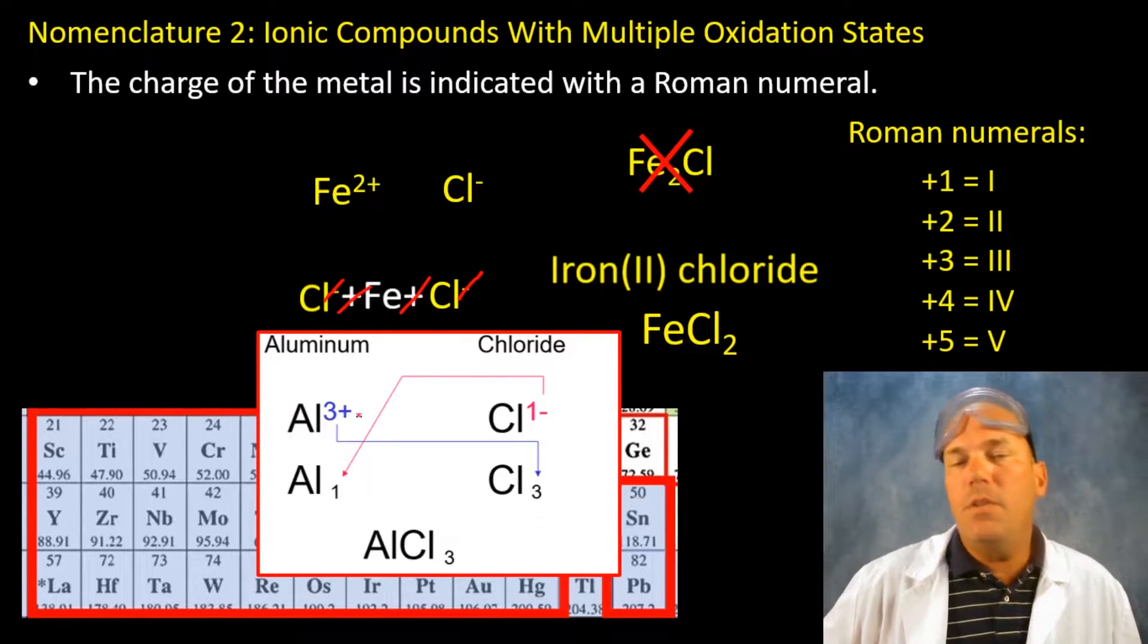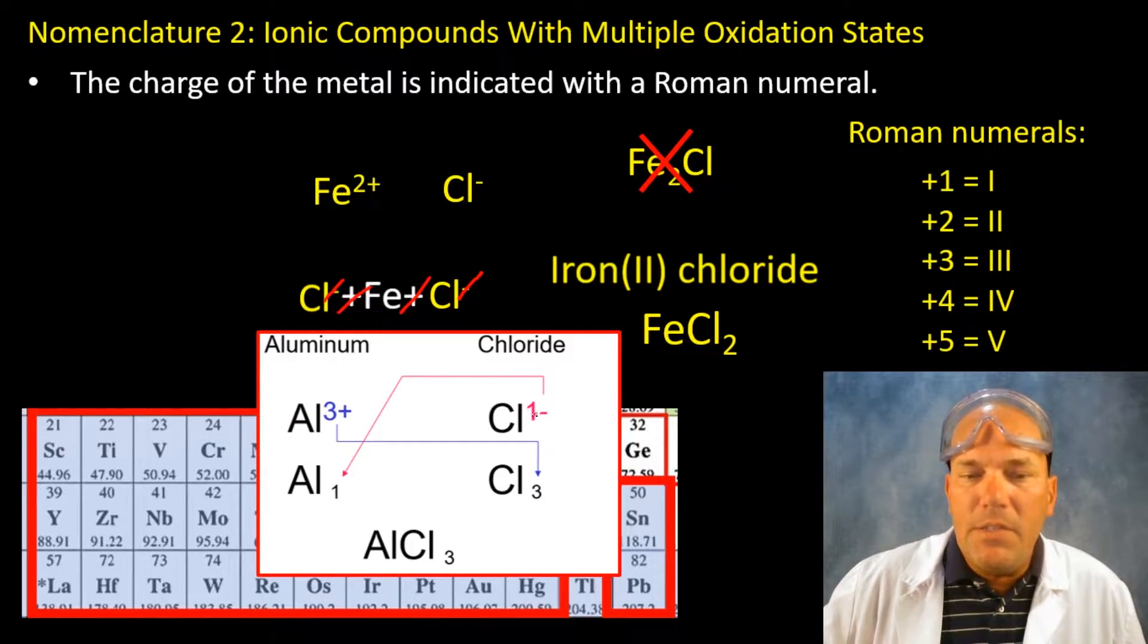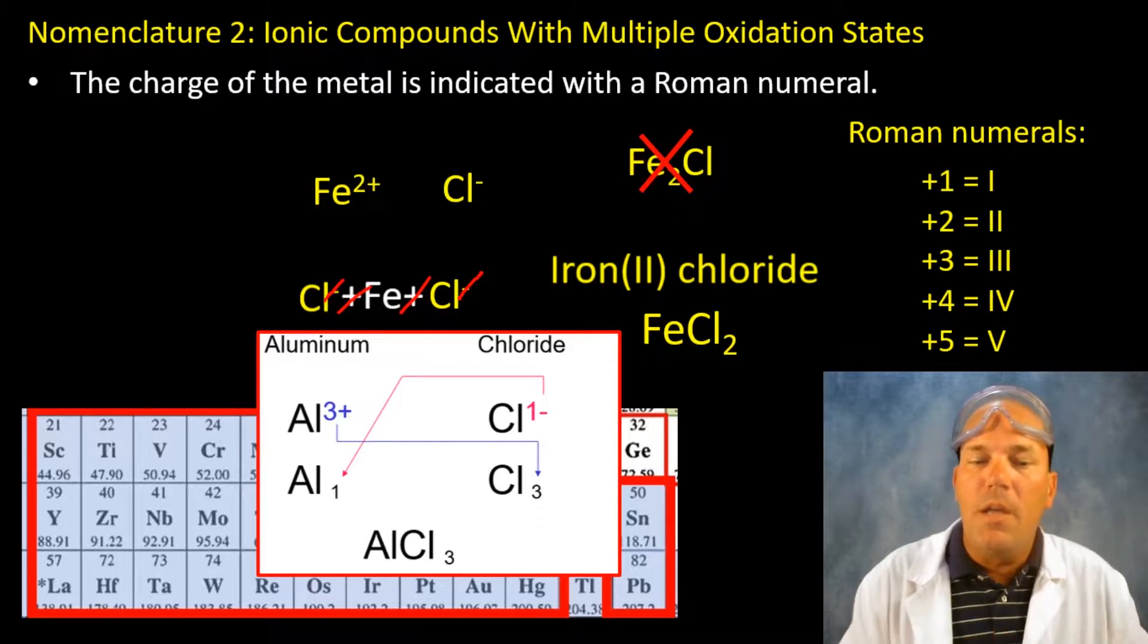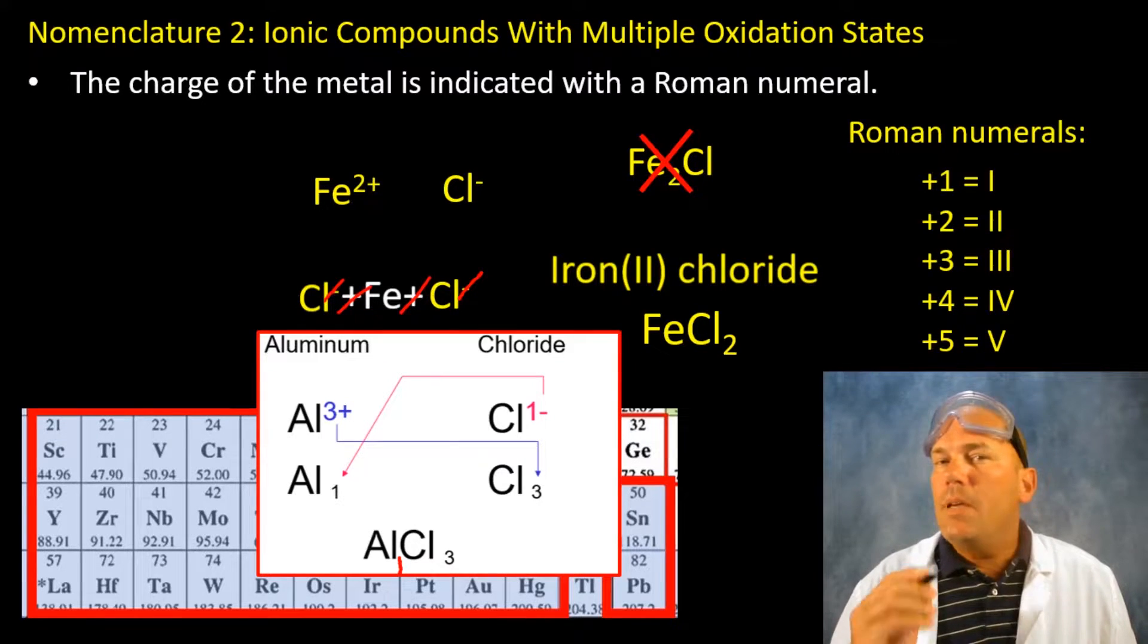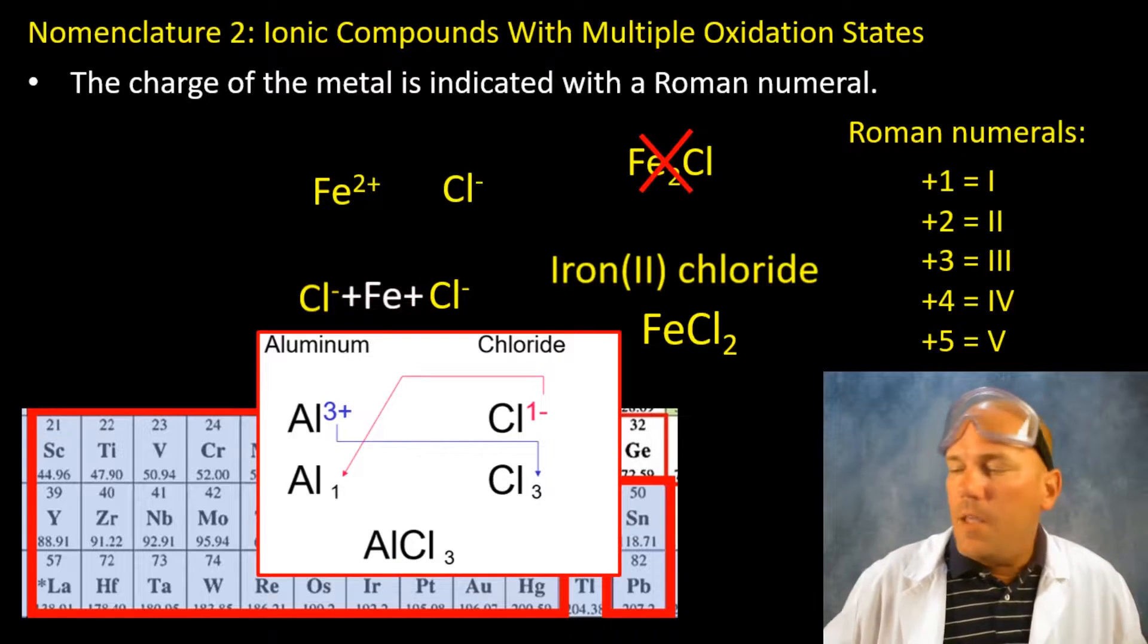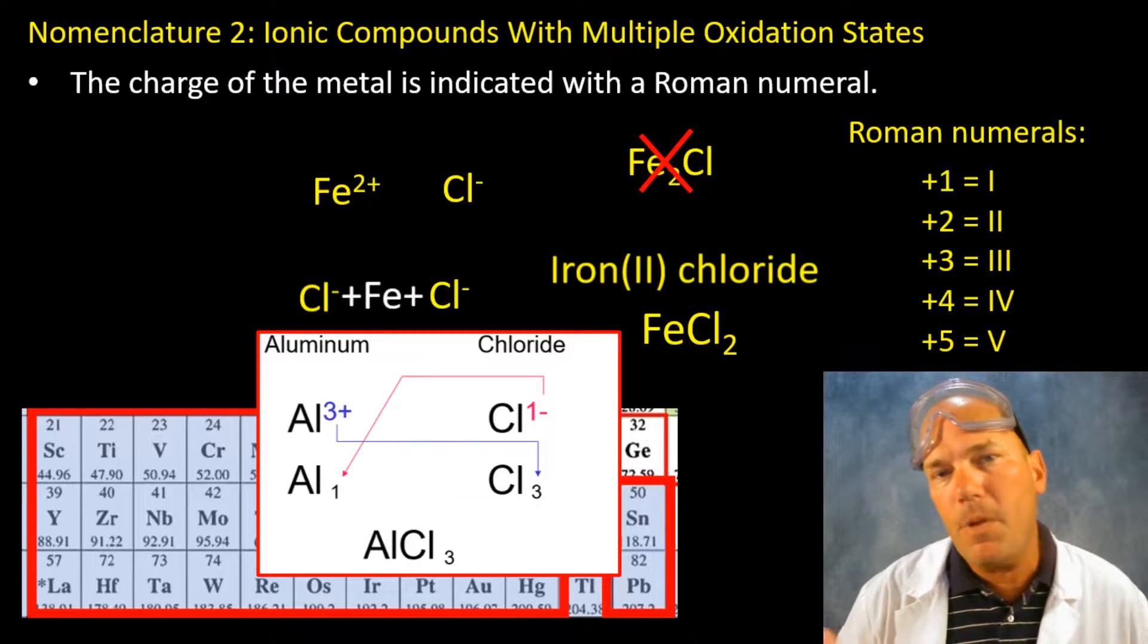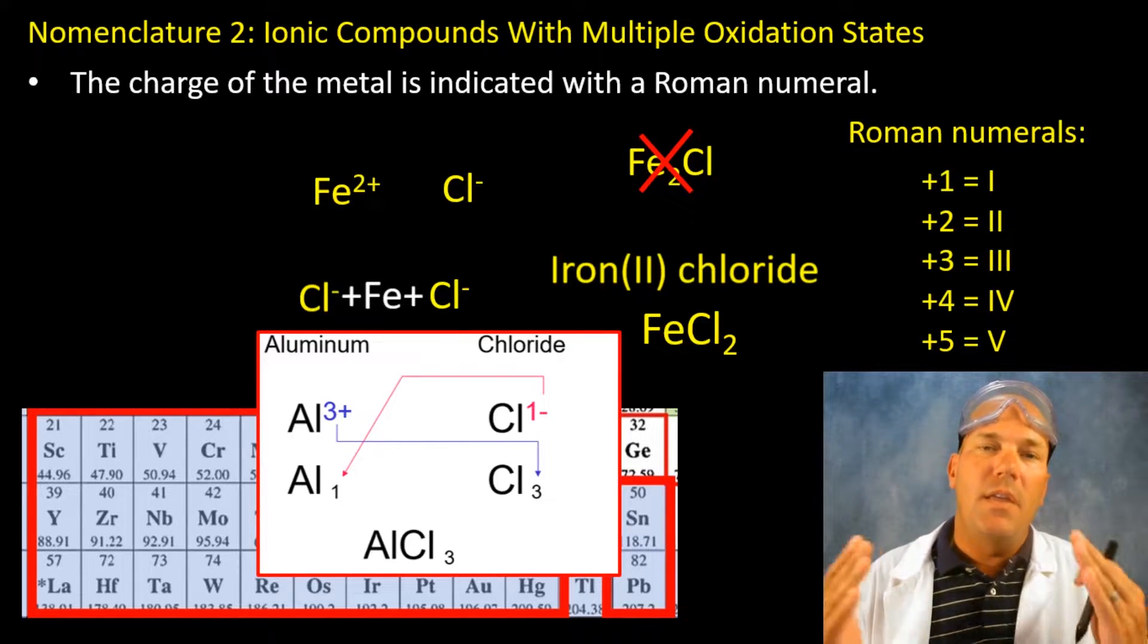So we have the charge of aluminum is plus three, chlorine minus one. In this case the one is shown here to accentuate the fact that we're going to crisscross that number. Notice the one does not show up here because that would be unnecessary and incorrect. So if you swap these charges and turn the charge into a subscript, and the subscript represents the number of atoms of those species, it works.